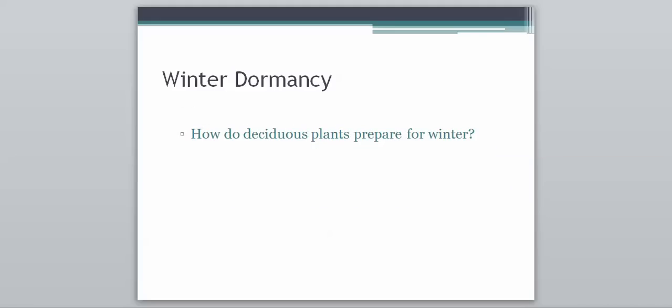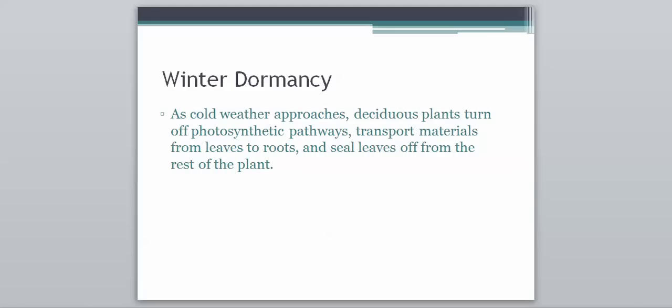How do deciduous plants prepare for winter? We are living in a deciduous forest, and deciduous simply refers to plants that lose their leaves. Deciduous plants lose their leaves in order to prepare for winter. As cold weather approaches, deciduous plants turn off their photosynthetic pathways — basically shutting down photosynthesis, which occurs in the leaves — and they transport their materials from their leaves to their roots, sealing the leaves off from the rest of the plant.